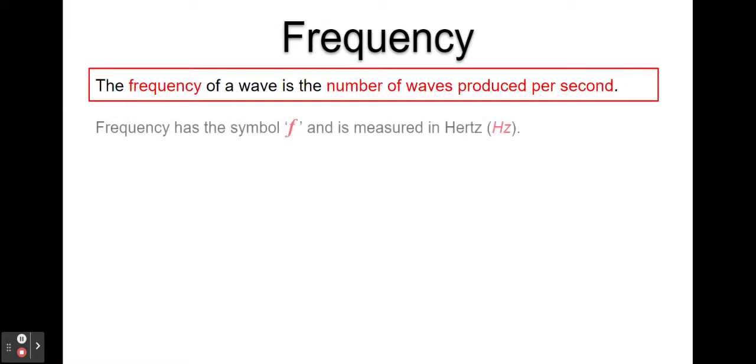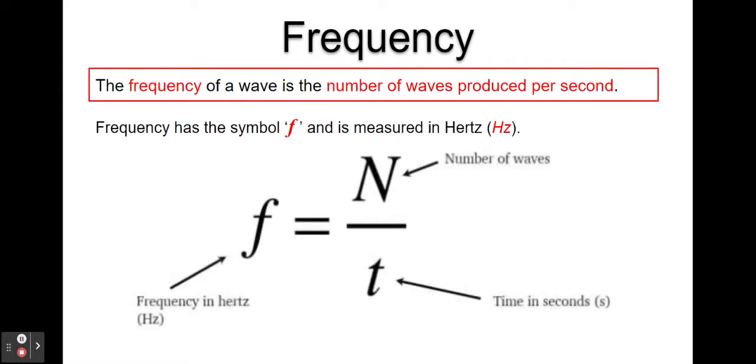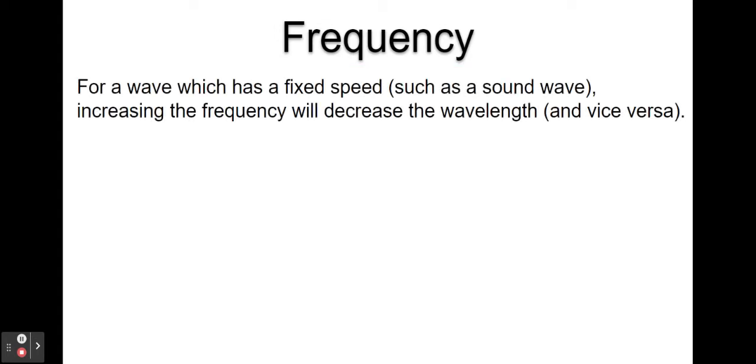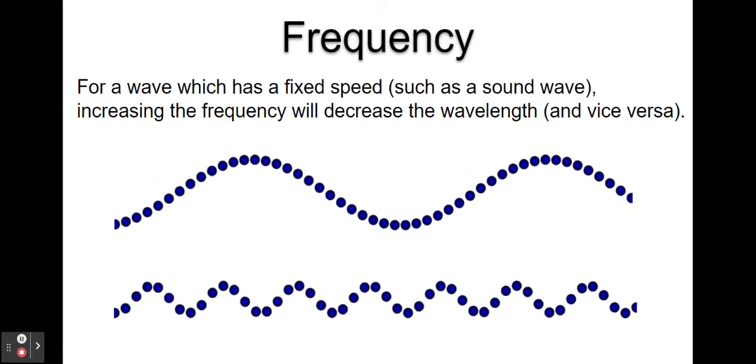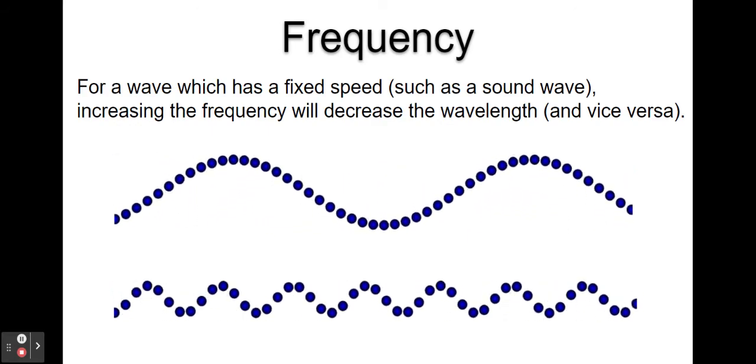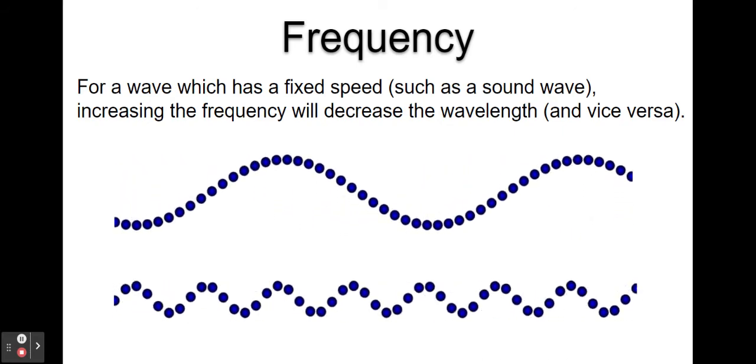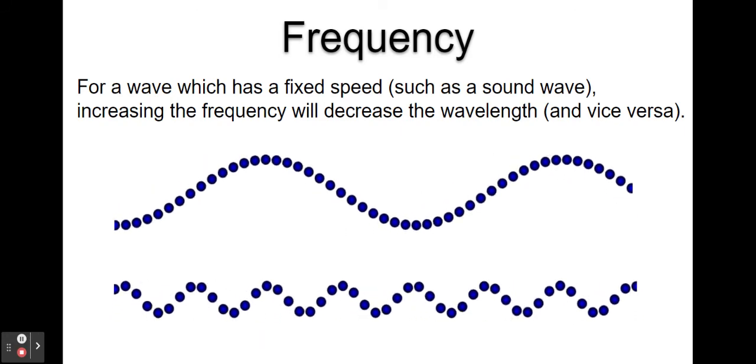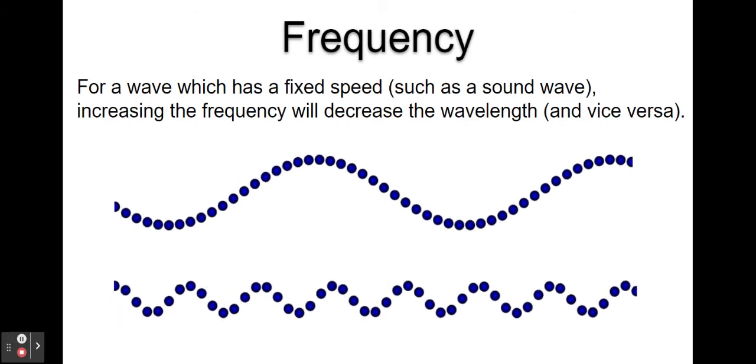Frequency has the symbol F and is measured in hertz. We can work out frequency using this formula, where frequency F in hertz is equal to N, which is the number of waves produced or which pass a point, divided by time. If a wave has a fixed speed, increasing the frequency will decrease the wavelength and vice versa. Here we can see a long wavelength wave with low frequency. Underneath, we have a wave moving at the same speed across the screen, but the wavelength is much shorter, so the wave motion is much more frequent. A higher frequency will have a shorter wavelength and vice versa, provided the wave speed is the same.